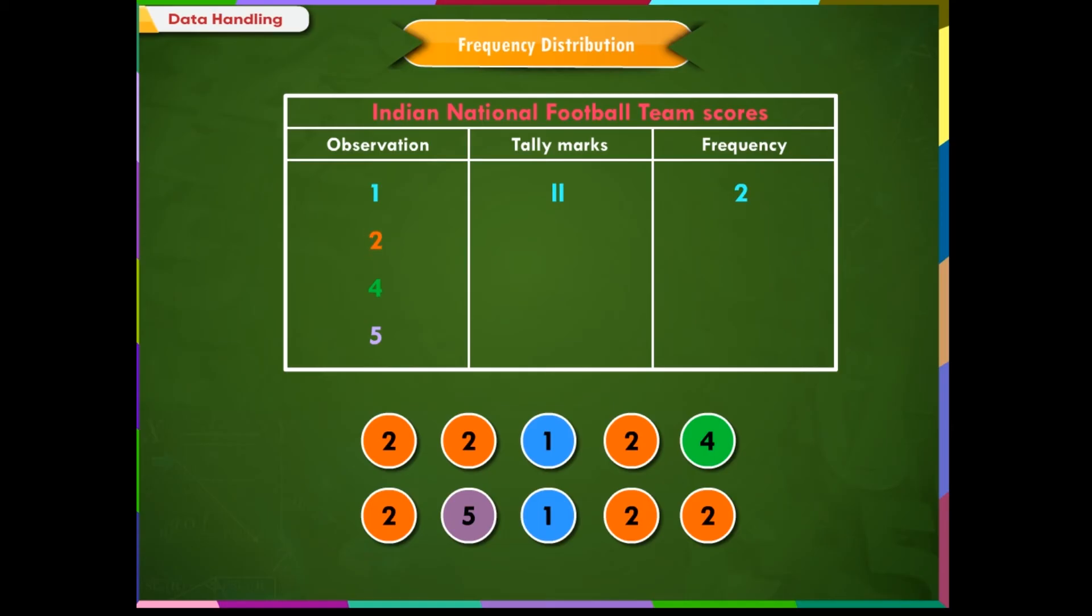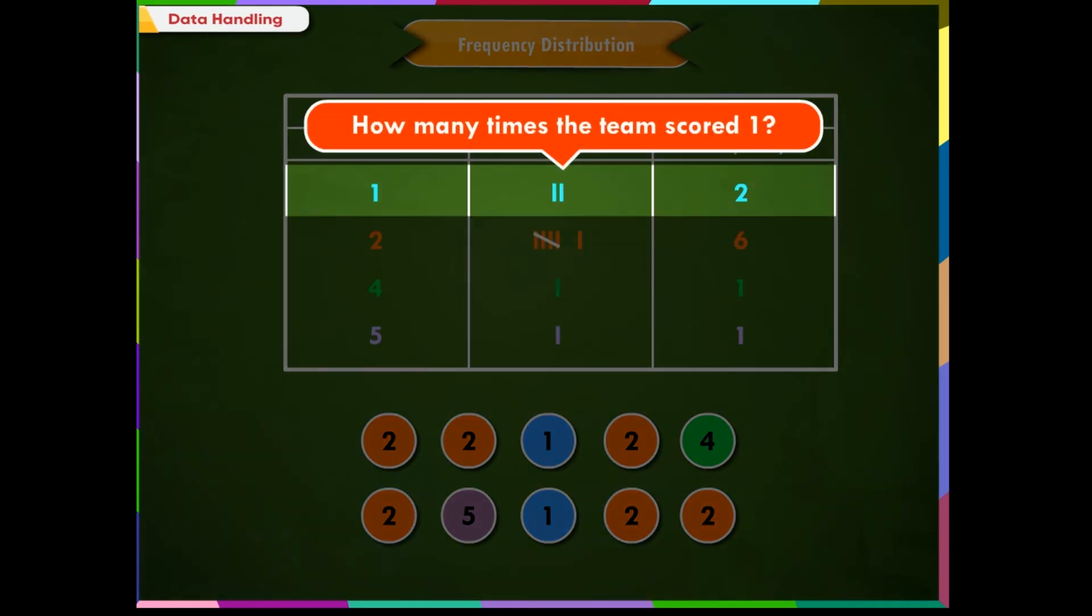The score 2 appears six times, so we put six marks here and write six in the frequency column. The scores 4 and 5 appear only once, so we write one each in these columns. From the table we can observe that the team scored one twice.